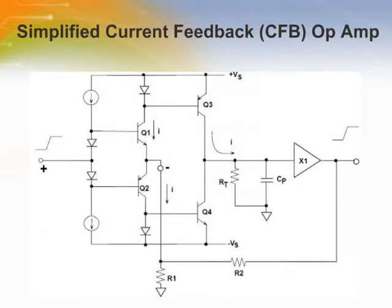The current feedback CFB op-amp topology is simply an application of fundamental principles of current steering. A simplified CFB op-amp has a high impedance non-inverting input that is buffered directly to the inverting input through complementary emitter follower buffers Q1 and Q2. Note that the inverting input impedance is very low, typically 10 to 100 ohms, because of the low emitter resistance — in the ideal case it would be zero. This is a fundamental difference between a CFB and a VFB op-amp, and also a feature which gives the CFB op-amp some unique advantages.